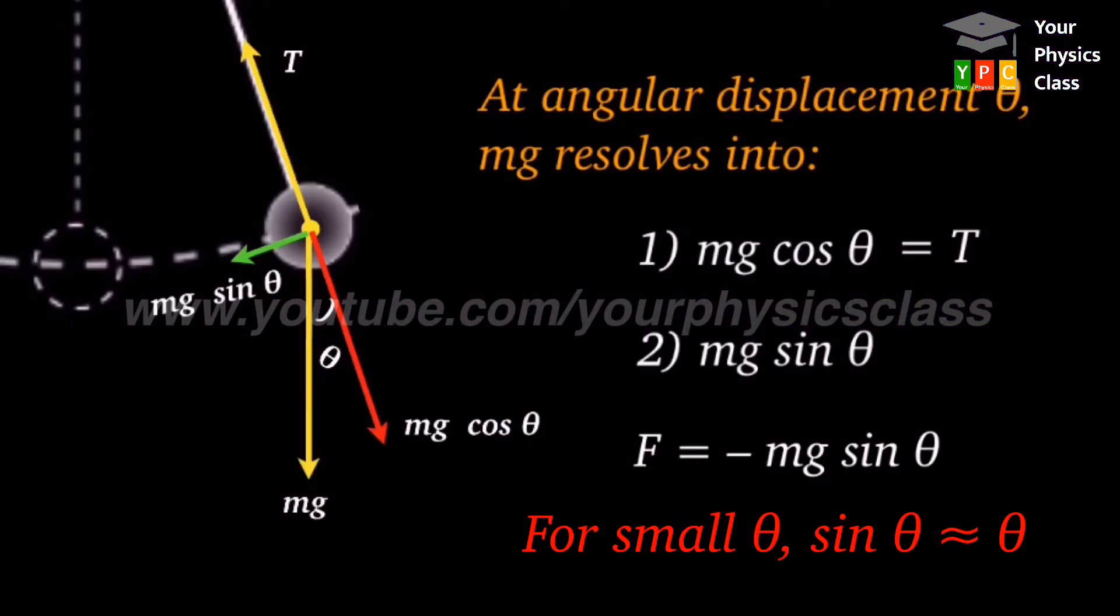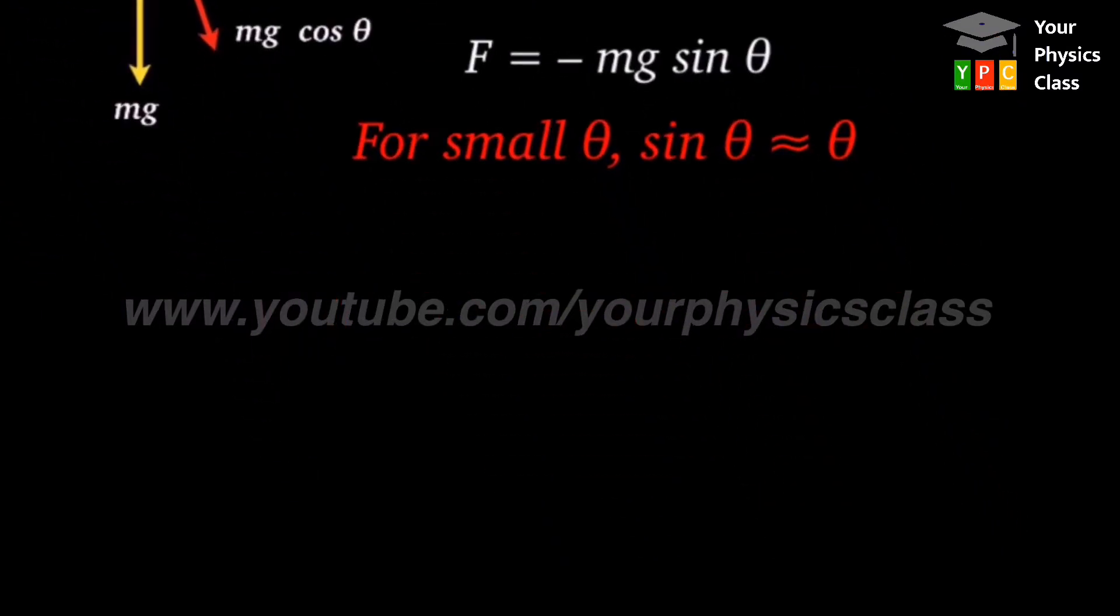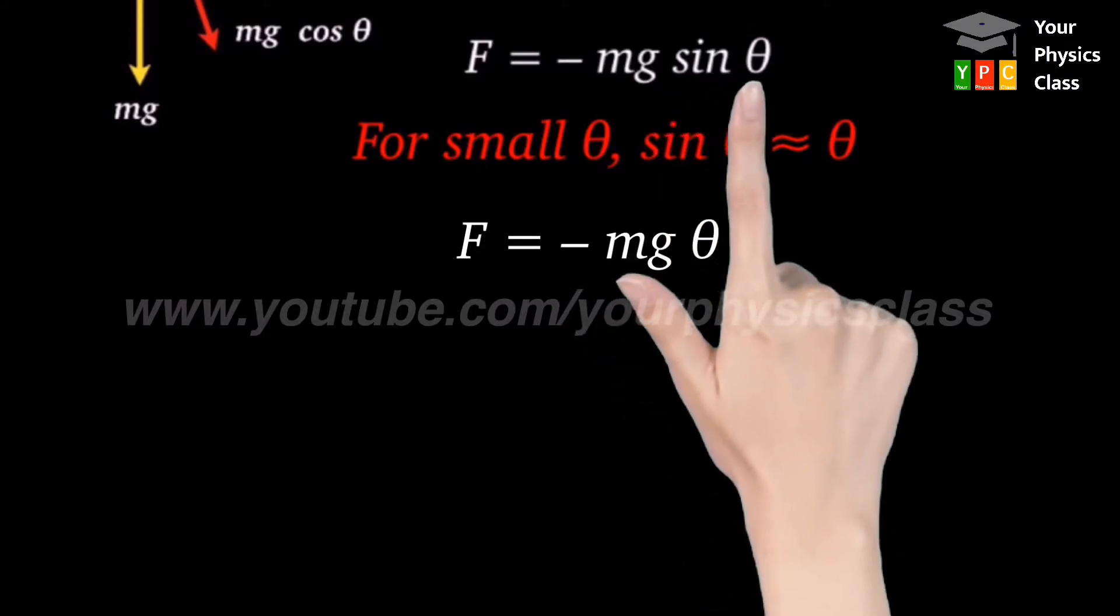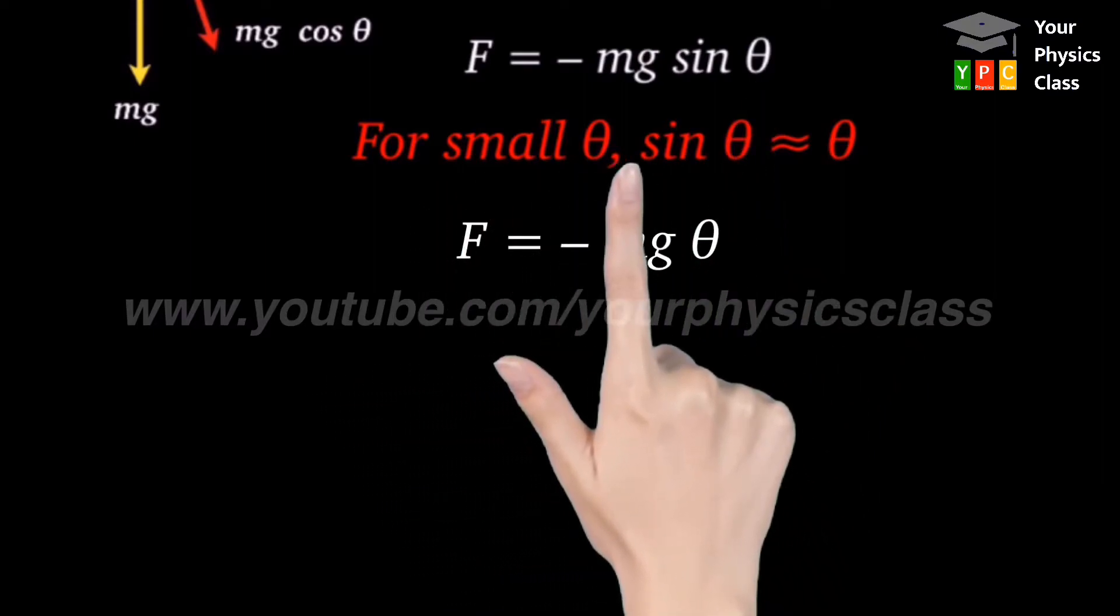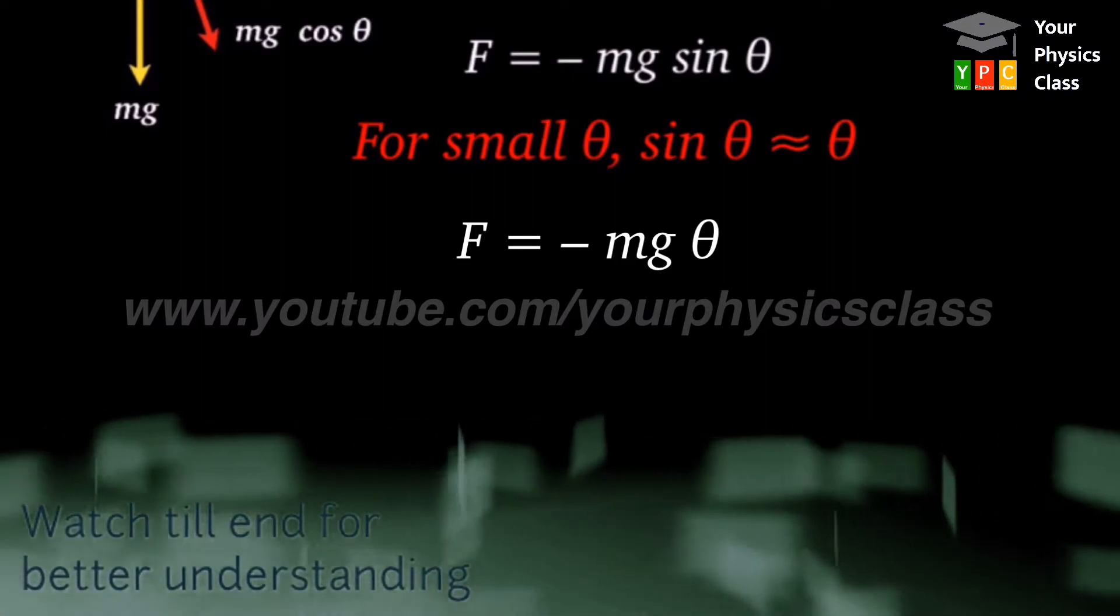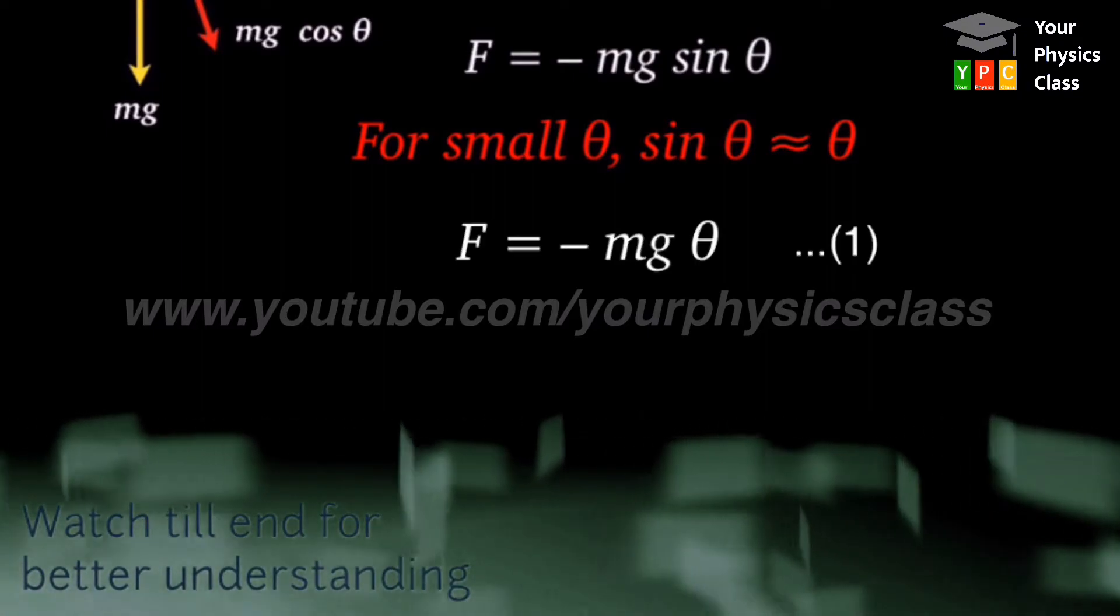For small angle theta, value of sin theta is nearly equal to theta. That is sin theta is approximately equal to theta. Hence, modifying equation of force as F equals minus mg theta. Here we have replaced sin theta by theta due to the fact that theta is very very small. So this is equation number 1.